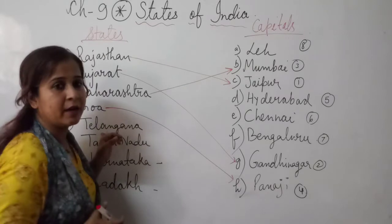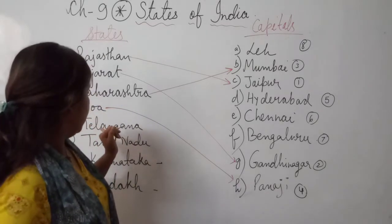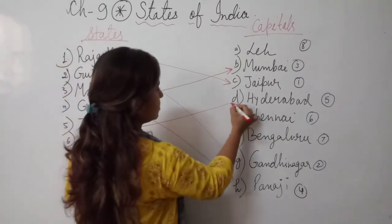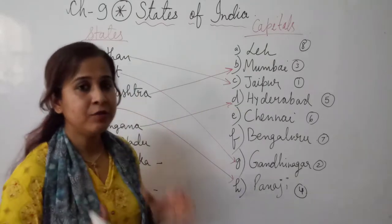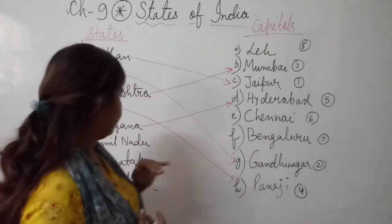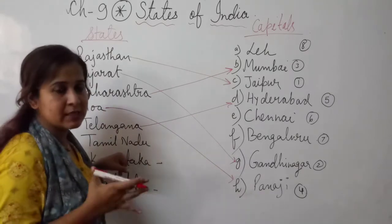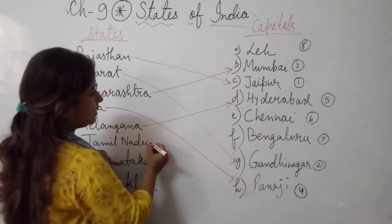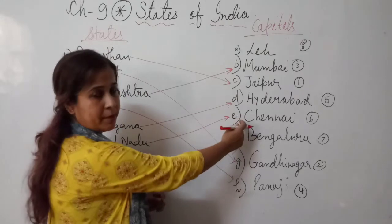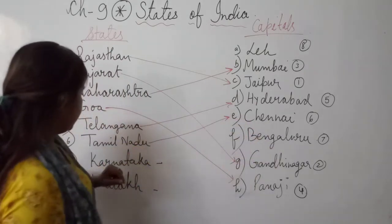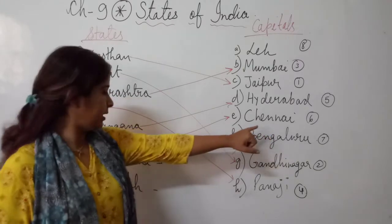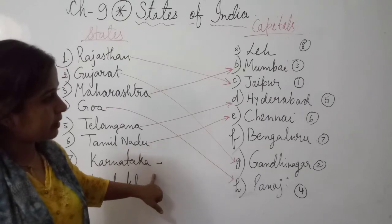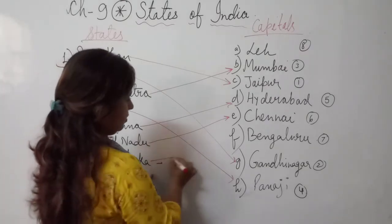Next is Telangana, which is a newly formed state. The capital of Telangana is Hyderabad. So Hyderabad is the capital of Telangana. Next, Tamil Nadu is a state in the southern part of India and its capital is Chennai. So Tamil Nadu is matched with Chennai. Chennai is also one of the metropolitan cities.